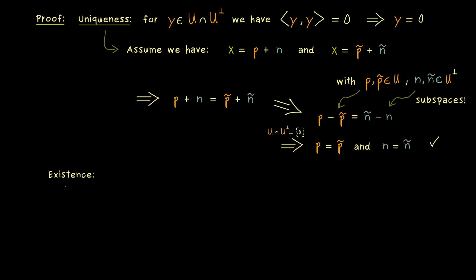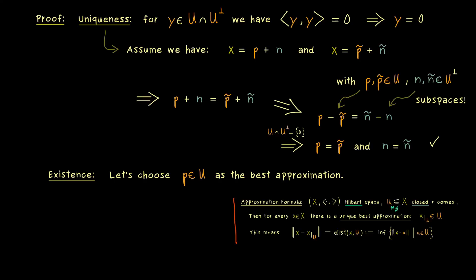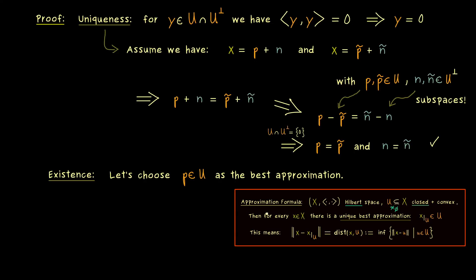And naturally, here we can finally use our approximation formula. So we choose p as the best approximation we have by the approximation formula. So as a reminder, let's put this important theorem here into a box. So you see, everything we need is satisfied. We have a Hilbert space and we have a closed subspace, so definitely a closed convex set.